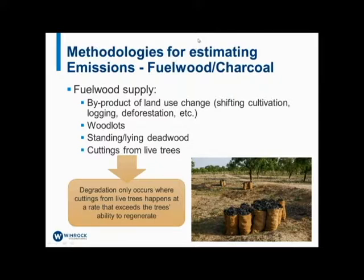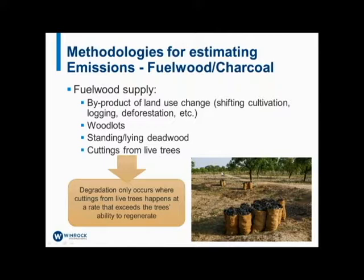I'm handing over to Lara now. I'm Lara Murray from Winrock International, and I'll go over the approaches for estimating degradation emissions from fuel collection and fire, then wrap up the presentation. Fuel wood is supplied from a variety of sources — as a byproduct of land use change, from fallow land during shifting cultivation, as a byproduct of logging activity, from deforestation, from woodlots, standing or lying dead wood, or from cuttings from live trees. When talking about forest degradation, we're interested only in cuttings from live trees when extracted at a rate that exceeds the tree's ability to regenerate — it's only this category that causes persistent damage to forest biomass stocks over time.